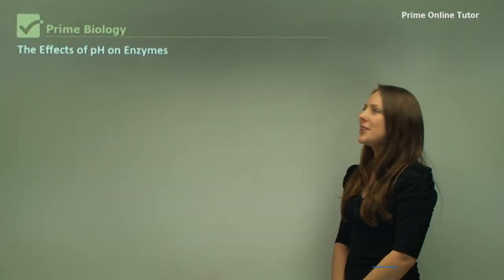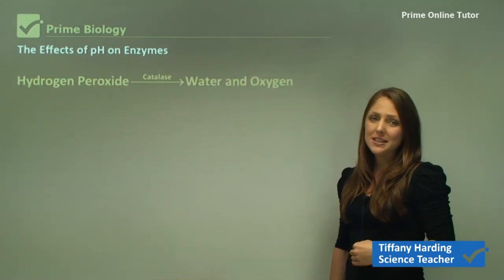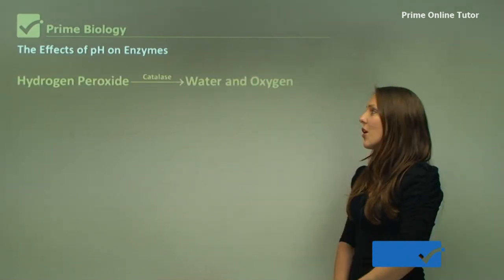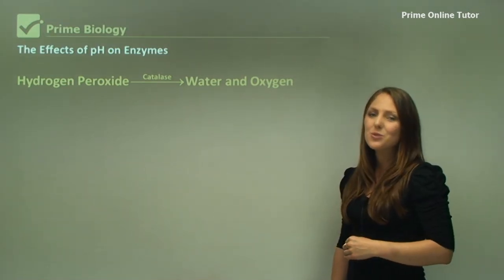In this experiment we're going to be looking at the effects of pH on enzyme activity. Hydrogen peroxide is very toxic to both the body and the environment. It needs an enzyme called catalase to break it down into water and oxygen.